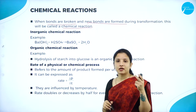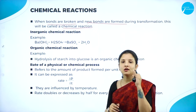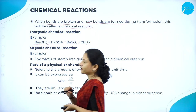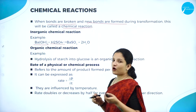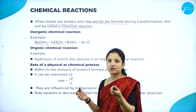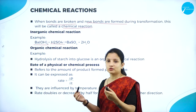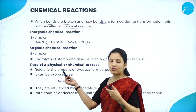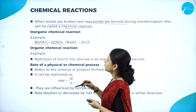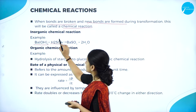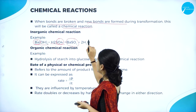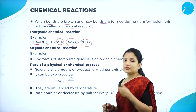Under chemical reactions there are two types: inorganic and organic. An inorganic example: barium hydroxide in the presence of sulfuric acid forms barium sulfate and water (2H₂O). This is an inorganic reaction taking place outside a living organism.